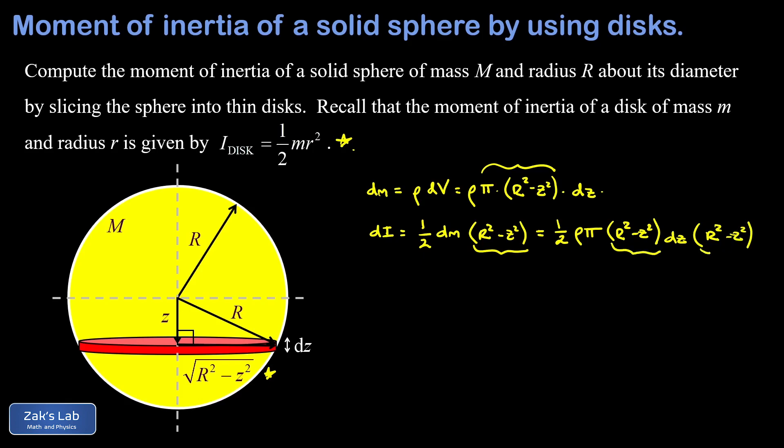We're going to clean things up a little. I noticed that I have two factors of r squared minus z squared. So we'll write that as r squared minus z squared squared and then move the dz to the end. Now at this point we have our moment of inertia contribution written entirely in terms of a single variable z.